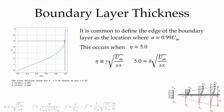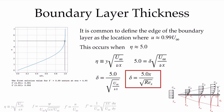Our similarity parameter at the edge of the boundary layer gives eta = 5 at y = delta. Substituting and solving for delta, multiplying by x/x, we get delta = 5x divided by the square root of Rex. This is the accepted equation for the thickness of the laminar boundary layer, derived directly from where 99% of the free stream velocity occurs.